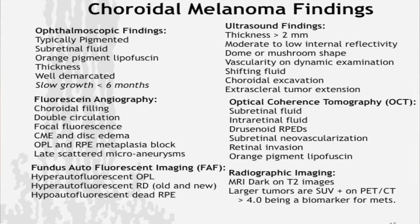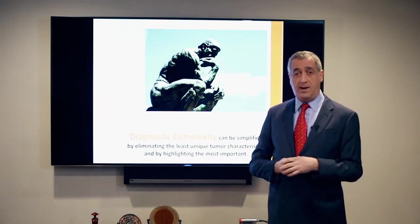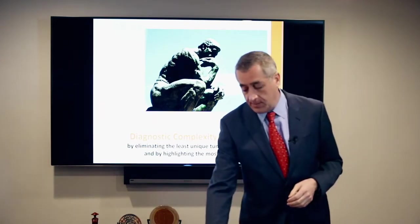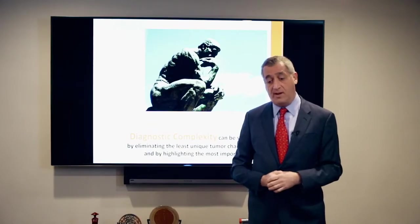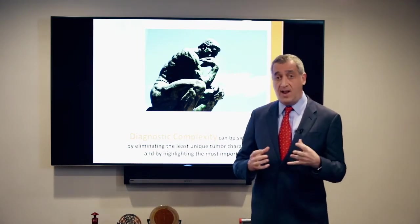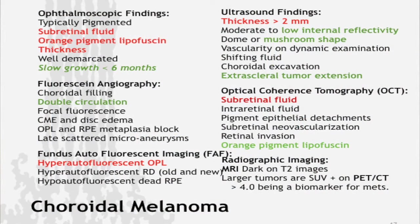So what do we do with 50 findings? We can simplify by eliminating the least unique tumor characteristics and highlighting the most important ones. From an ophthalmoscopic standpoint, when we look in the eye, if we see subretinal fluid, orange pigment — that lipofuscin — or thickness, those are important. If we document growth, that's even more important.